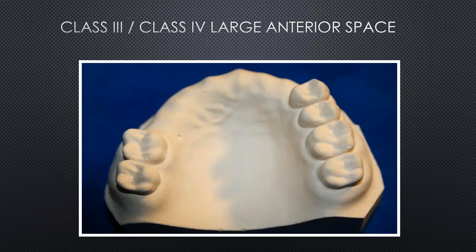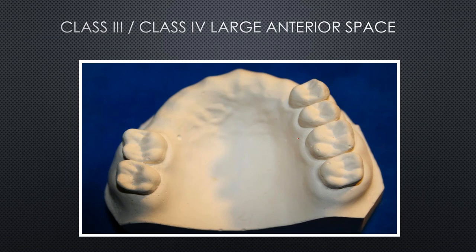Moving to topic two: the large anterior space. Here a rotation definitely exists. Technically, according to Kennedy's classification, this may be a Class 3 because it involves some posterior teeth. But with a large anterior space, a fulcrum line will certainly exist, and Paul has seen this designed incorrectly in the marketplace.